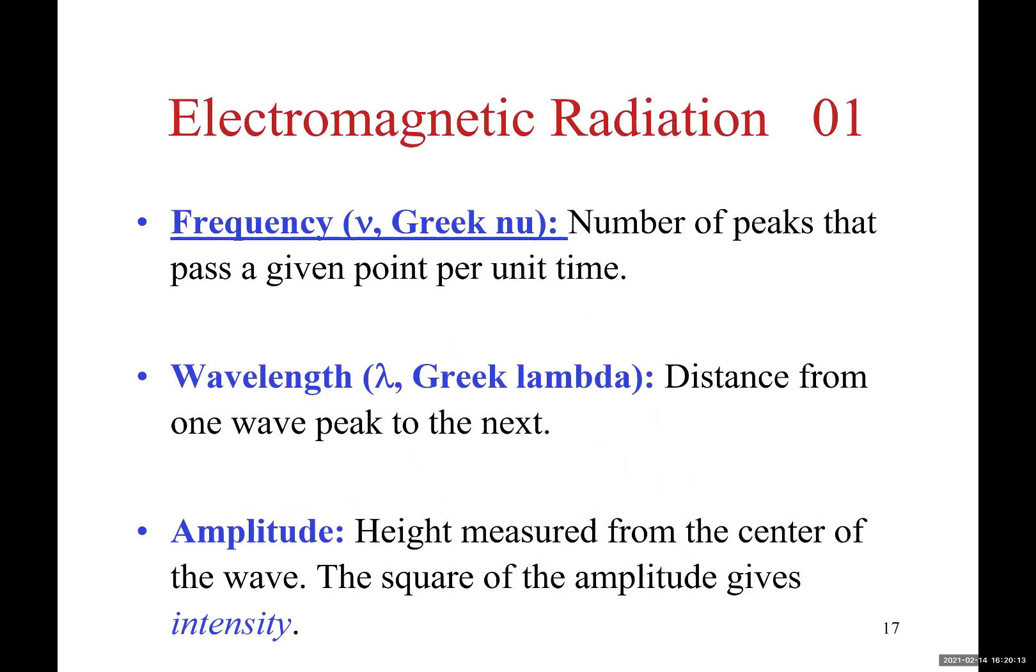I'm going to define some properties of electromagnetic radiation. We have oscillating waves, and these waves have a certain number of peaks per second per unit of time. We call this frequency. Frequency is the number of peaks which passes through a point in space in unit of time. We use the Greek letter nu to show frequency of electromagnetic radiation.